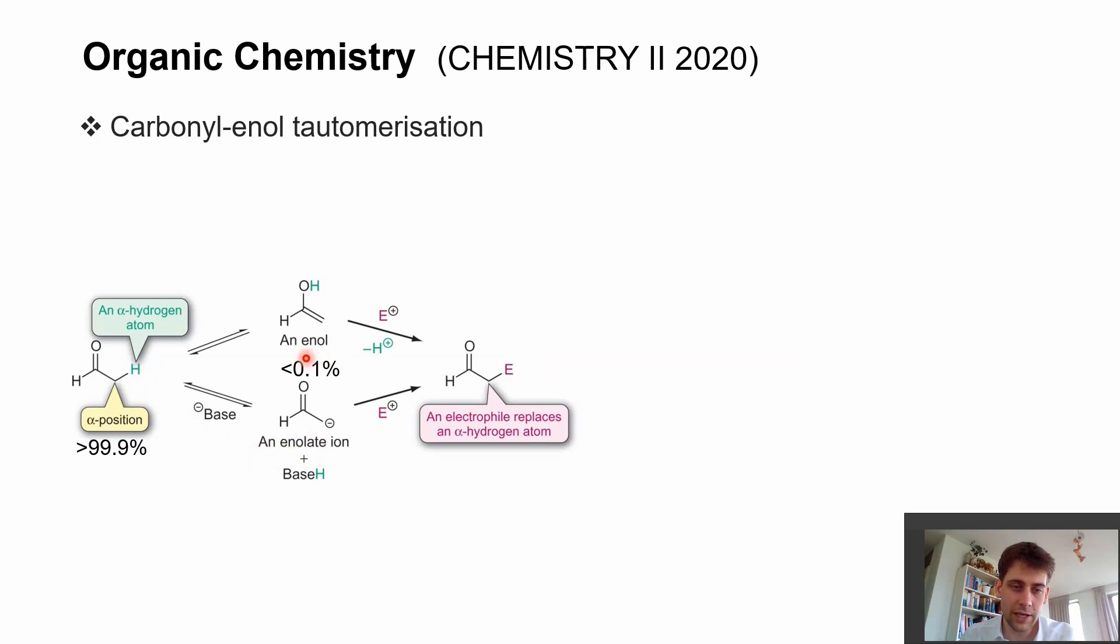Here we have the carbanion, and this can, of course, directly get attacked by an electrophile. Then we are replacing our hydrogen atom in the alpha position with our electrophile.